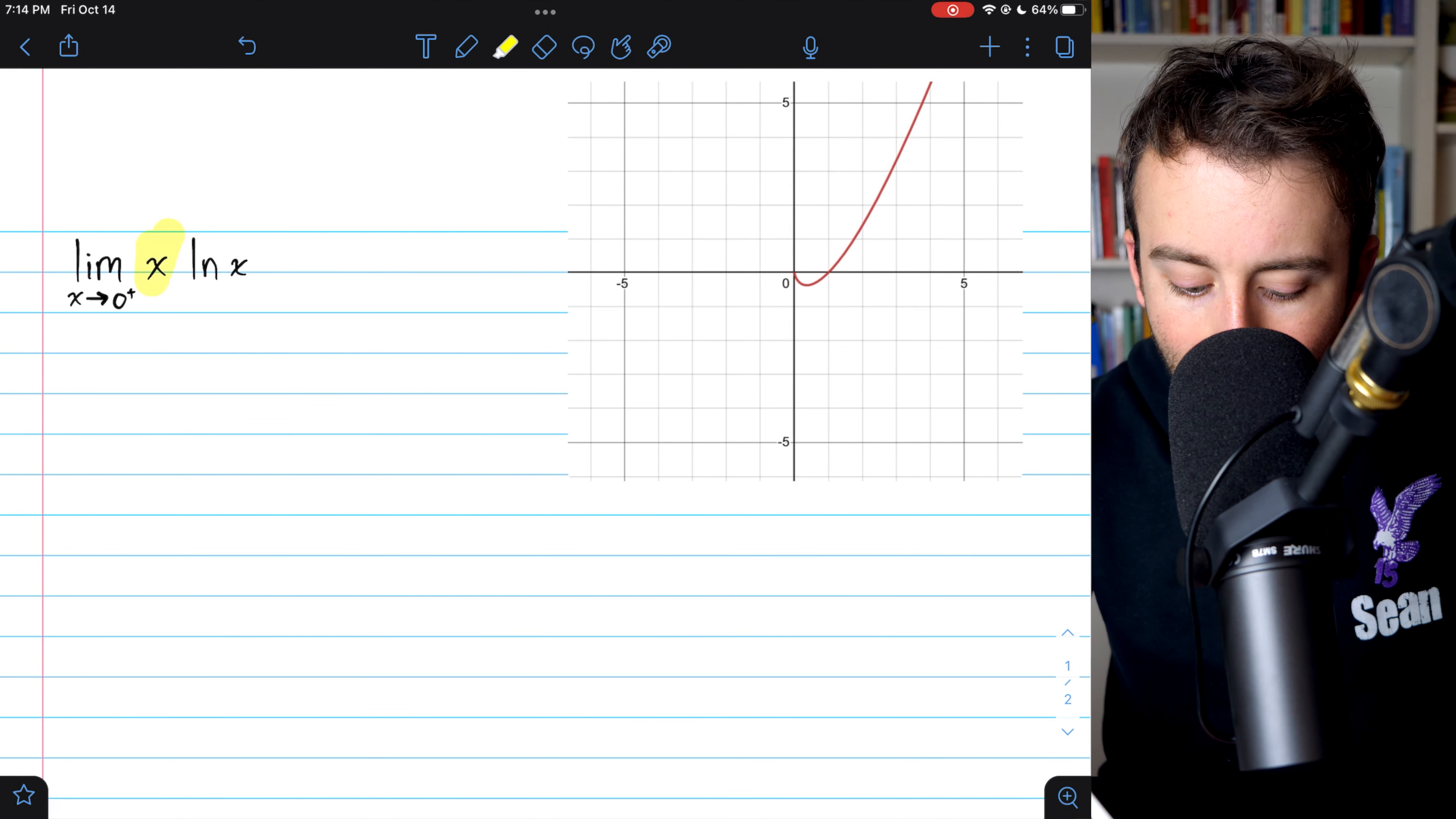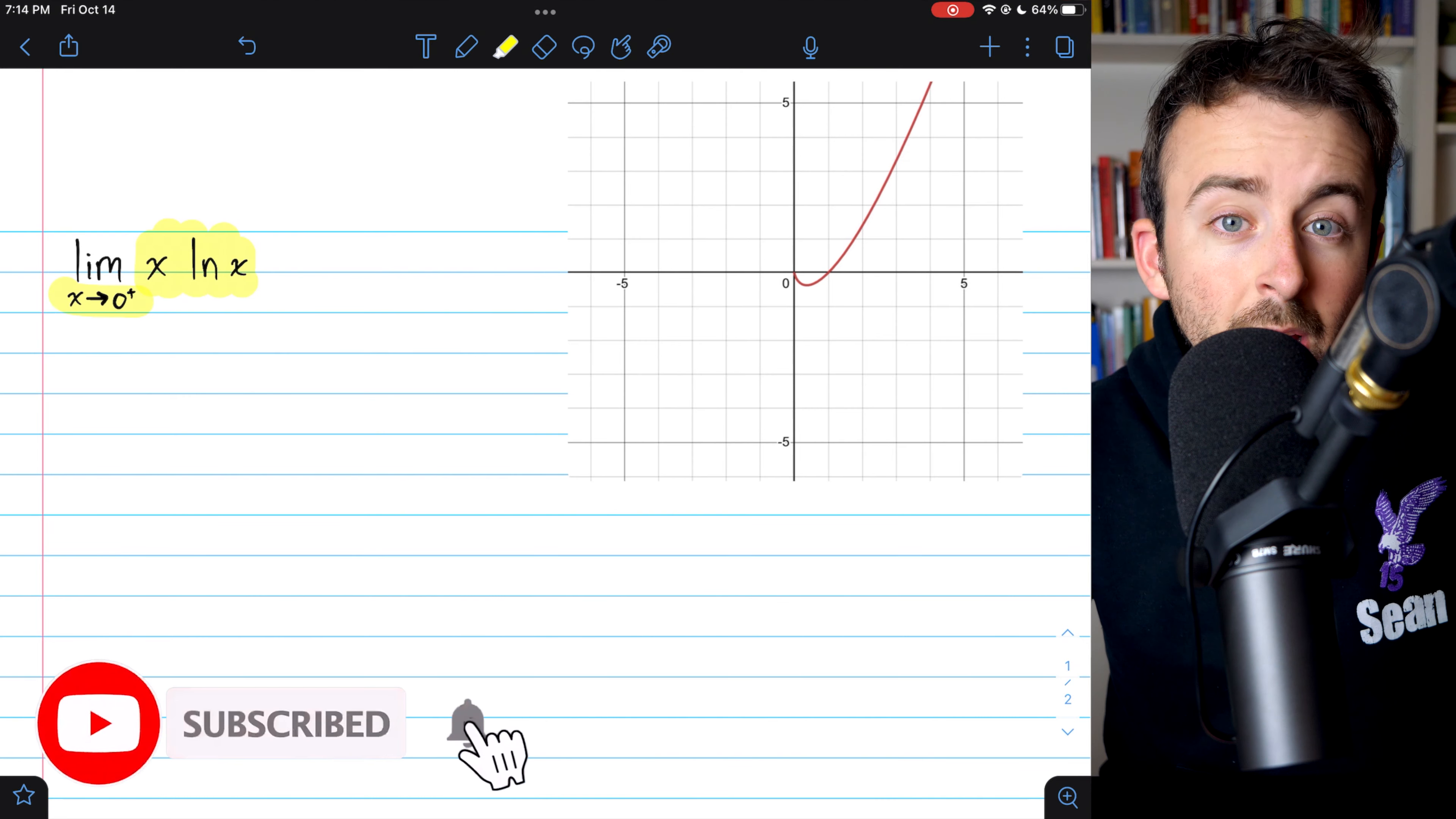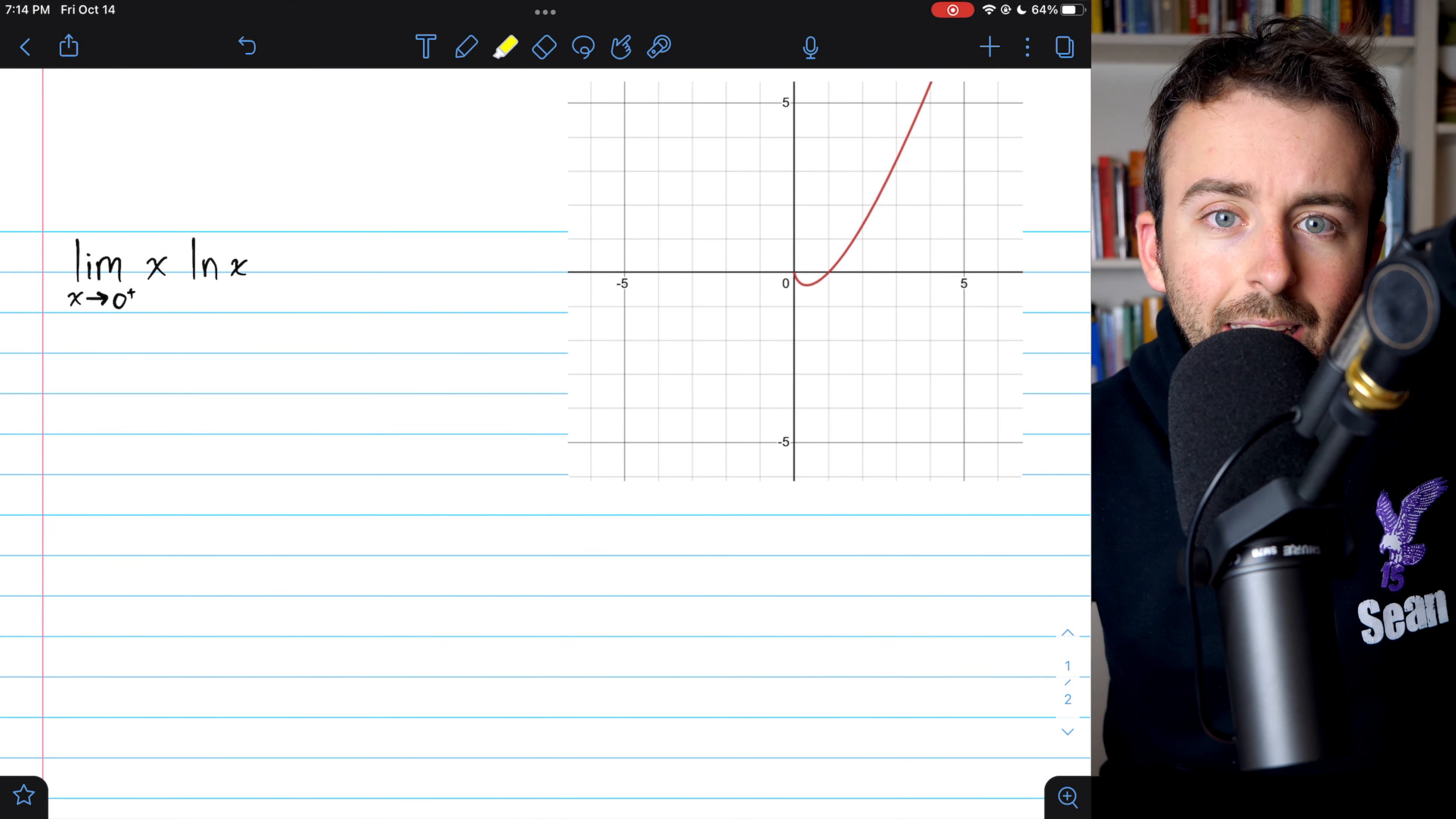We're going to evaluate the limit of x times ln(x) as x approaches zero from the right. We can't approach zero from the left, of course, because natural log is undefined for negative inputs.